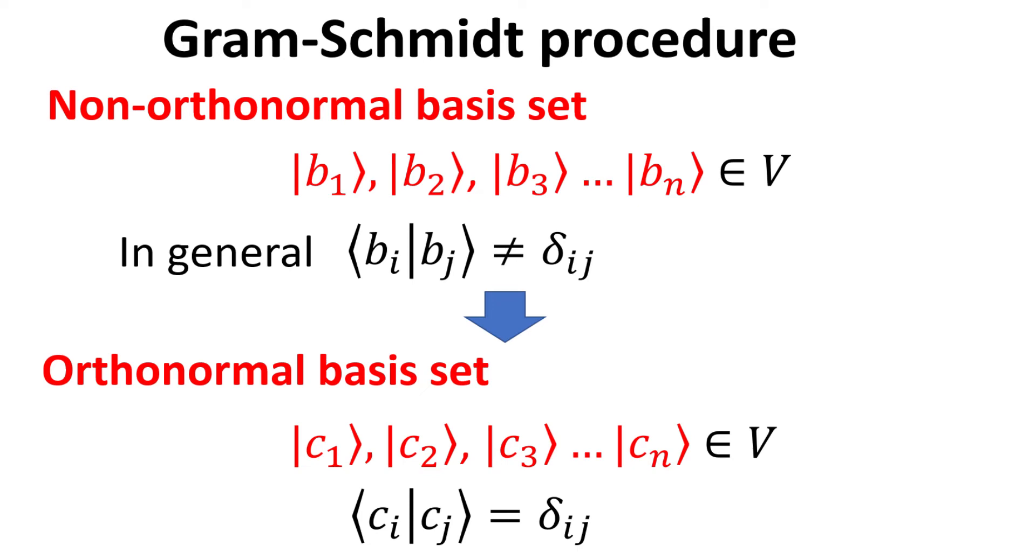The Gram-Schmidt process takes this finite, linearly independent set of vectors and generates an orthonormal set, herein denoted as C1, C2, and so on up to Cn, that spans the same n-dimensional complex vector space.